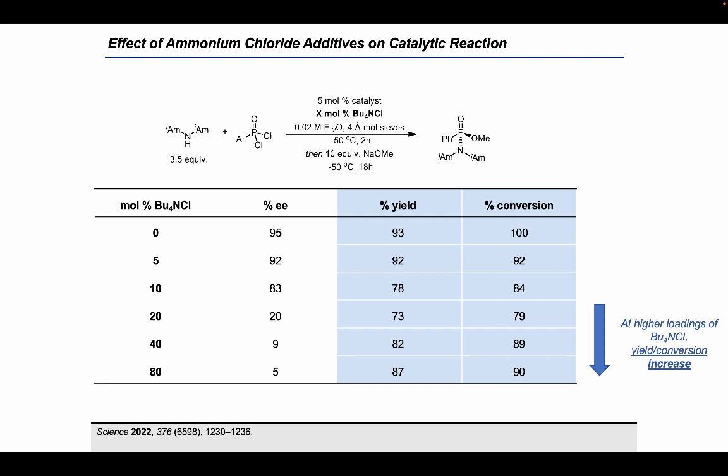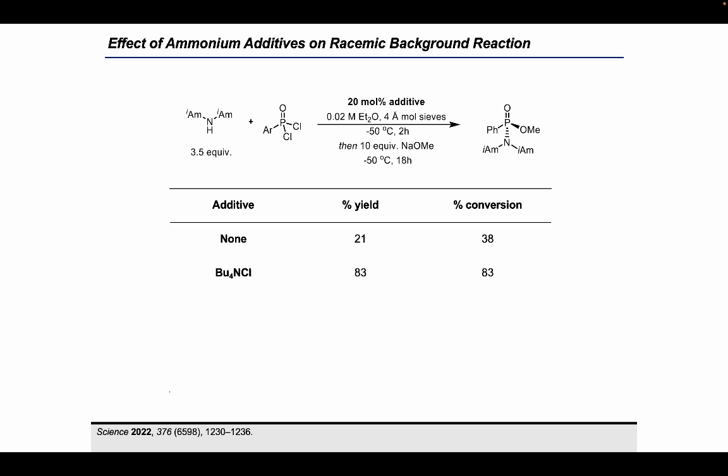However, at higher loadings we observed that yield and conversion increase with increasing amounts of ammonium chloride, which is inconsistent with catalyst inhibition alone. This indicated that tetrabutylammonium chloride may not simply be an inhibitor but also may promote the reaction on its own. We therefore investigated the effect of tetrabutylammonium chloride on the racemic background reaction—the same conditions but in the absence of catalyst—and found that at 20 mol%, tetrabutylammonium chloride does catalyze the racemic reaction, inducing significant rate acceleration.